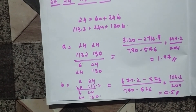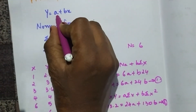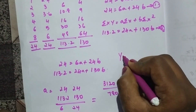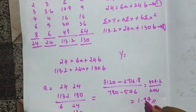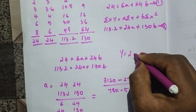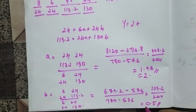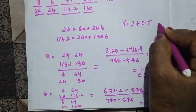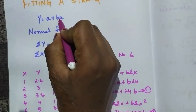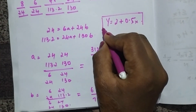Now we have our values: a ≈ 1.97 which is approximately 2, and b = 0.5. Substituting into the equation y = a + bx, we get y = 1.97 + 0.5x, or approximately y = 2 + 0.5x. This is how you find the equation of a straight line using the method of least squares.